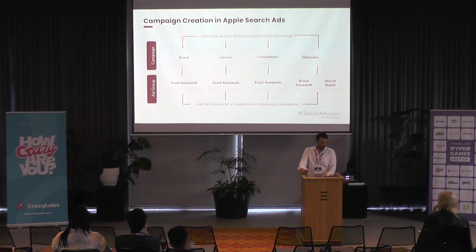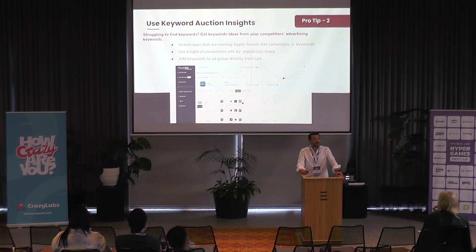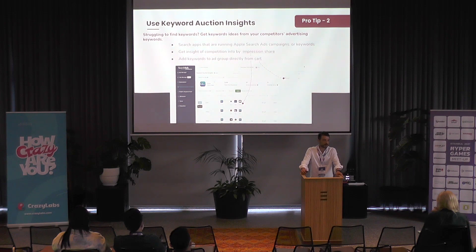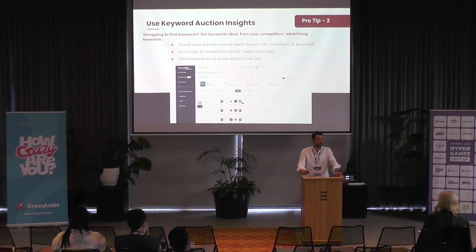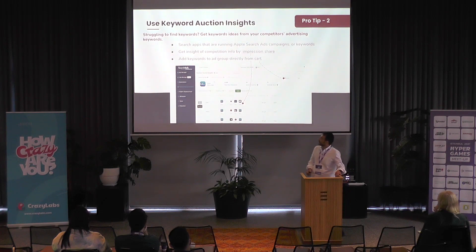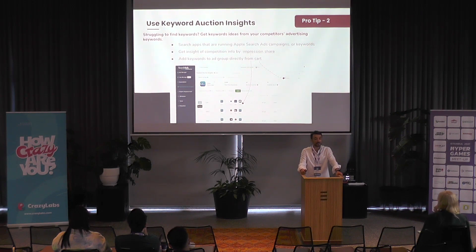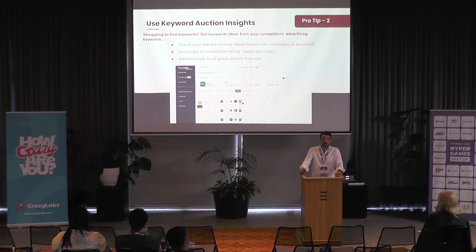Finding keywords is important. According to Mobile Action data, in the US storefront alone there are over 25,000 apps using Apple Search Ads. When it comes to gaming, it's around 8,000 apps. Finding the right keywords and targeting them is quite important, so you need to be aware of the competition. In our platform, you can discover which app is bidding which keywords in which countries and how often — including impression share. For example, you can see what Roly is doing to acquire users on Apple Search Ads, giving you a clear picture of where to focus first.